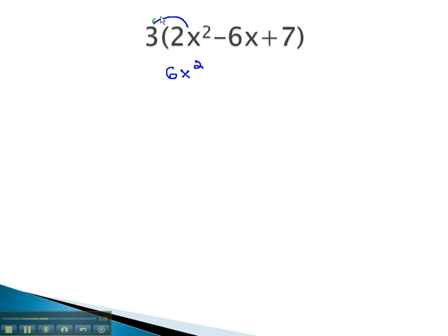Continuing to distribute, we do 3 times the negative 6x. 3 times negative 6 gives us negative 18 of these x's, and 3 times 7 gives us positive 21, and this becomes our final solution.